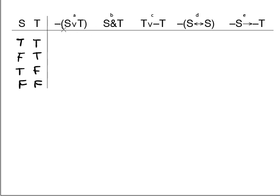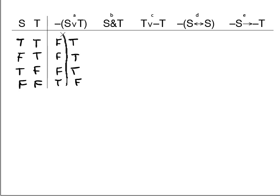S wedge T, then negate it. We do the wedge first — wedge is true when either part is true — so we get true, true, true, false. Then we negate that, giving us false, false, false, true. That's the main connective, so we'll circle it.